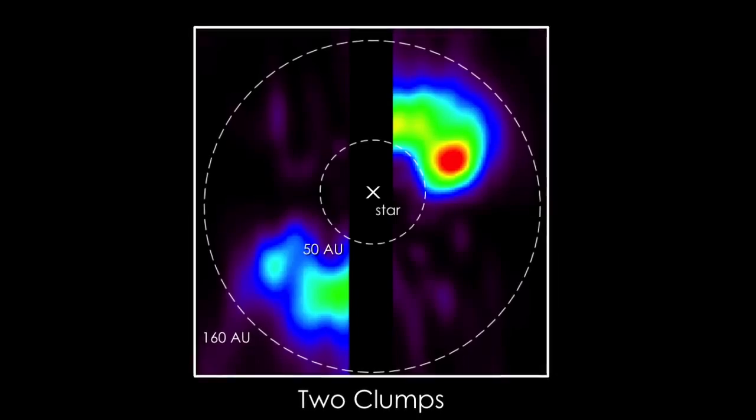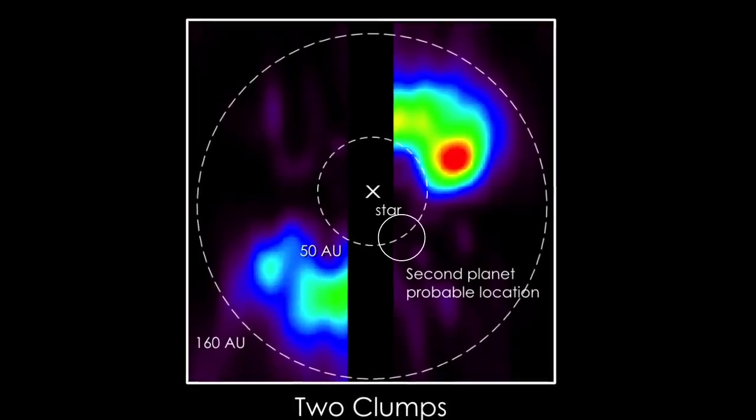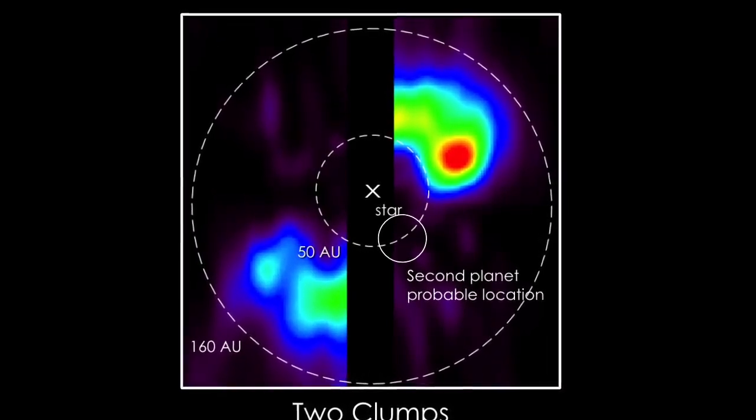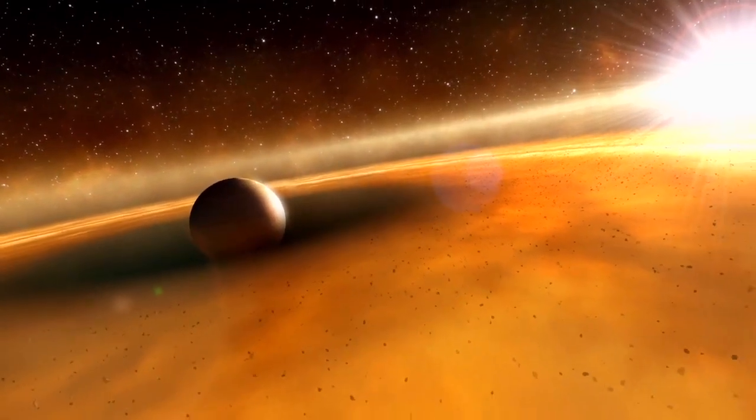We believe the comets are shepherded together by an as-yet undetected second planet, whose gravity confines the comets into a small region so they frequently collide.